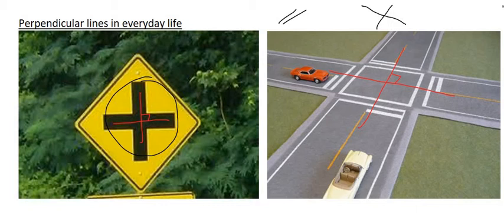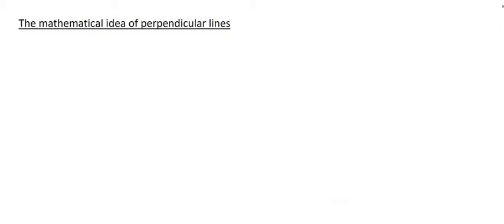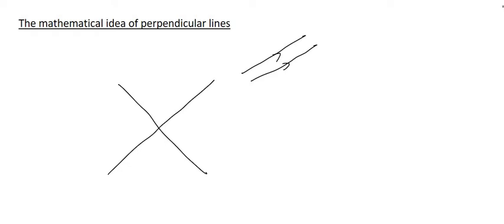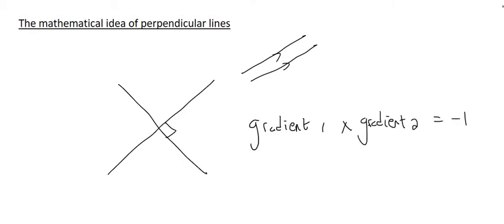So perpendicular lines hit each other at 90 degrees. But what exactly does this mean mathematically? When we looked at parallel lines, we said that parallel lines have the same gradient. However, perpendicular lines are completely opposite to each other. What this means mathematically is that if you multiply the two gradients together and the lines are perpendicular, your answer should always be negative 1. So the gradient of line 1 times the gradient of line 2 will give you an answer of minus 1. If that happens, then the lines are perpendicular.